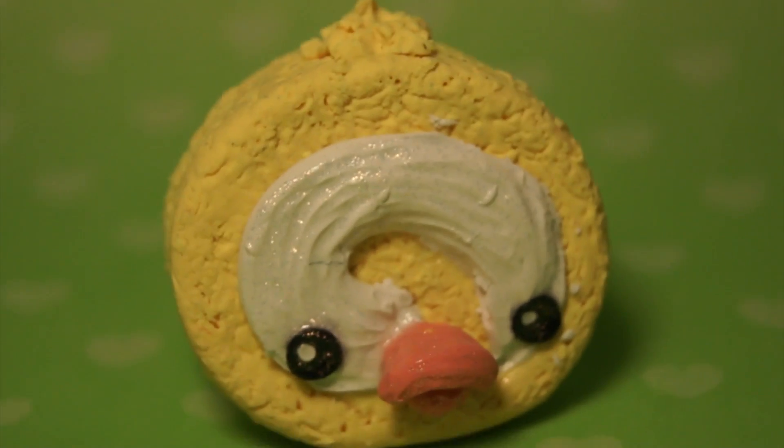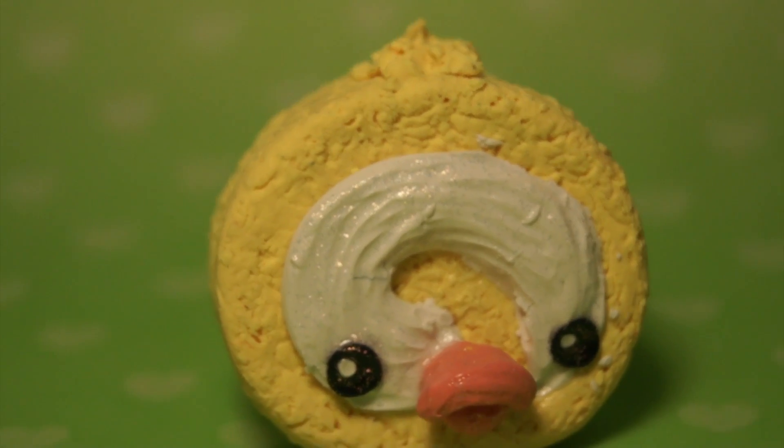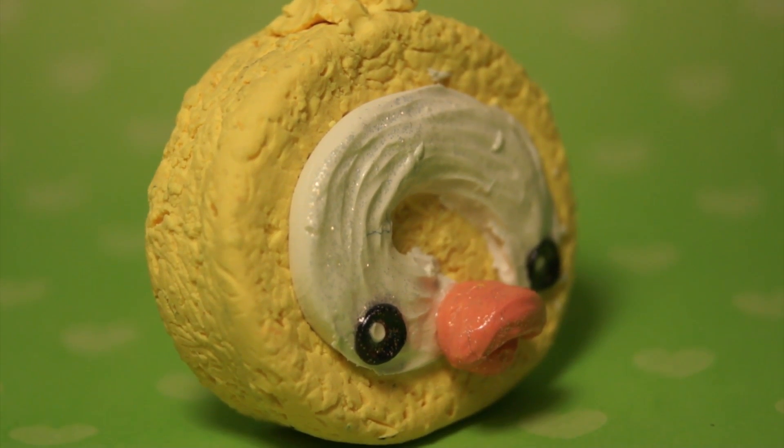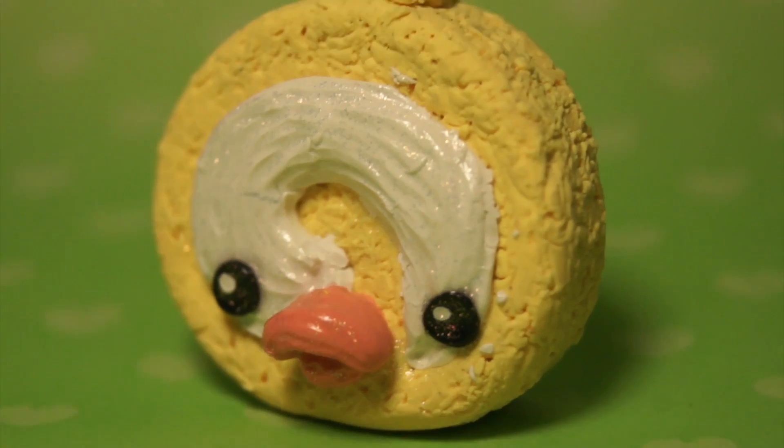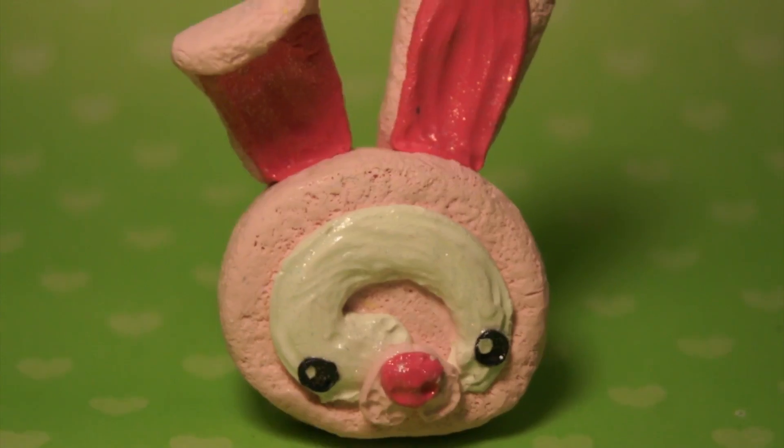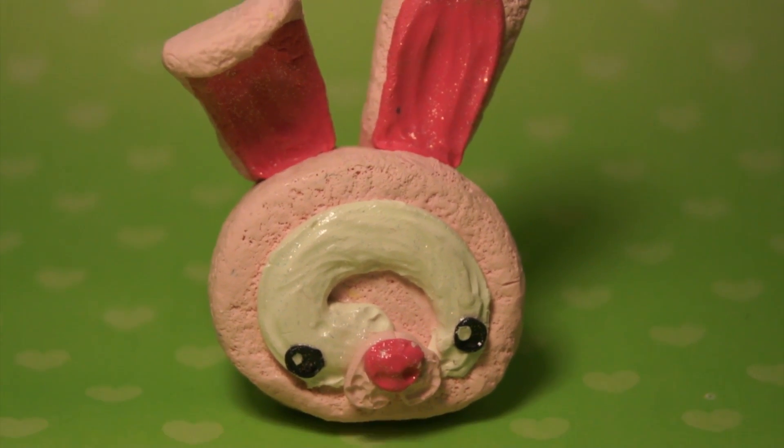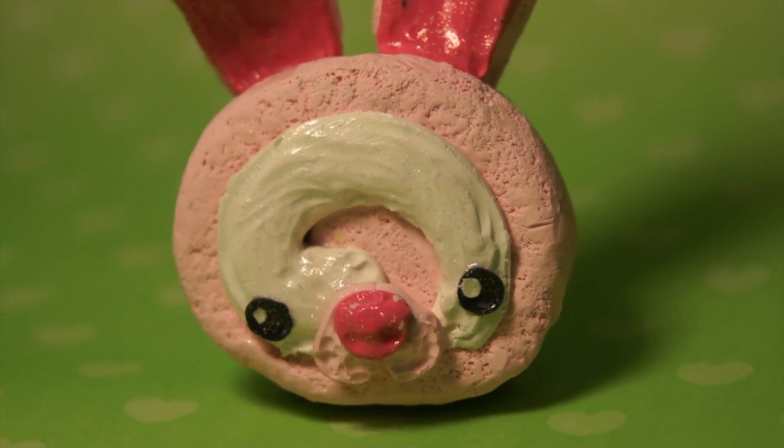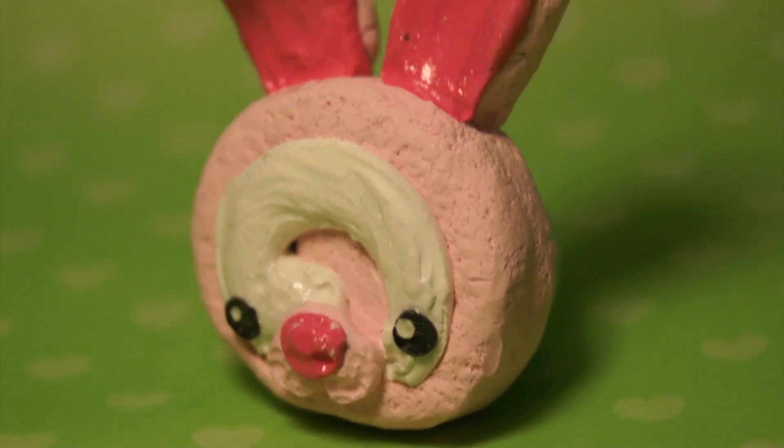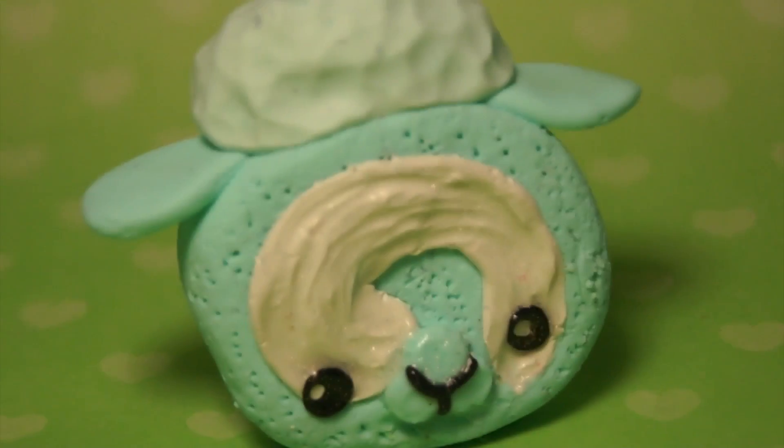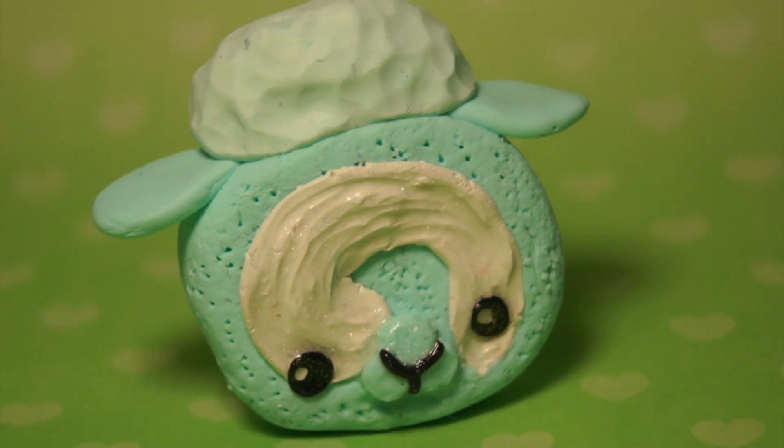And then I baked and glazed just the inner parts, and forgive these for being a bit dirty. But here's the ducky which I think is really cute. The bunny. And the little lamb. It kind of looks like an alpaca but I think he's super adorable.